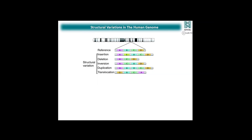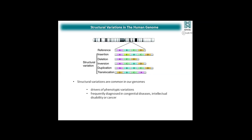Having this concept of functional and structural units of our genome in mind, it's easy to imagine that these TADs are prone to genomic changes. In our lab, we study structural variations such as deletions, inversions, or duplications. These structural variations are quite common in our genomes — on the one hand, they are drivers of phenotypic variation, and with whole genome sequencing and array CGH, they are also frequently diagnosed in clinical settings. They are associated with congenital disease, intellectual disabilities, and cancer.